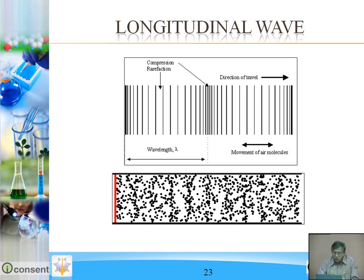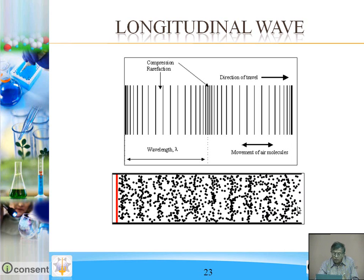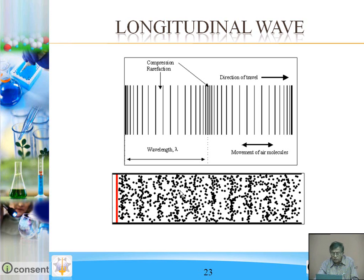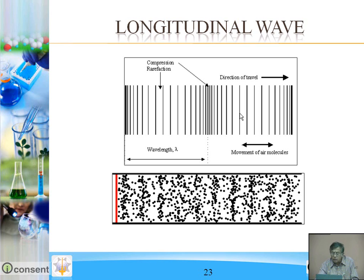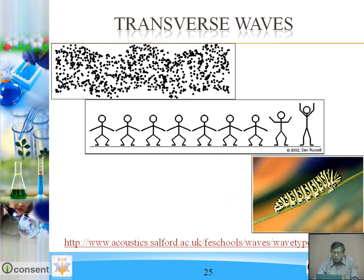These are examples of longitudinal waves. Compressions and rarefactions are formed. These are the compressions and in between are the rarefactions. The compressions are travelling ahead and in between there are rarefactions. In the graph of this, where there is compression there is a crest, and where there is rarefaction there is a trough. Crest means the upper one and this is the trough. C means compression, R means rarefaction.